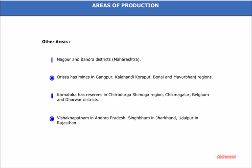Orissa has mines in Gangpur, Kalahandi, Koraput, Bonai, and Mayurbhanj regions. Karnataka has reserves in Chitradurga, Shimoga region, Chikmagalur, Belgaum, and Dharwar districts. Other producing areas include Visakhapatnam in Andhra Pradesh, Singhbhum in Jharkhand, and Udaipur in Rajasthan.